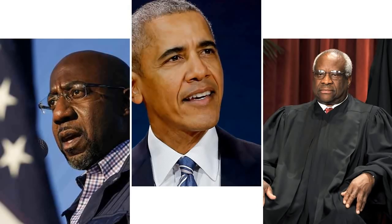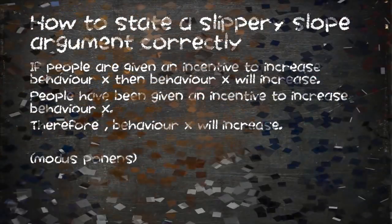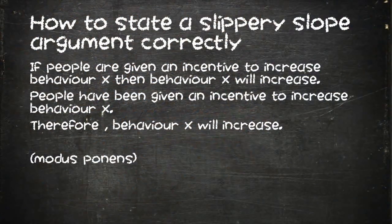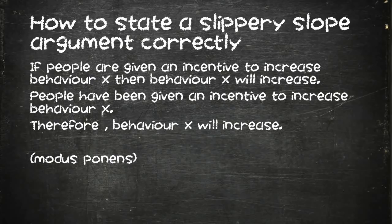So what is the missing part of the argument that would make it not a fallacy? It strikes me that all these arguments are missing is the unstated assumption that people respond to incentives — something anyone who studies economics understands instantly. It's just a missing premise. In modus ponens it would be: if people are given an incentive to increase behavior X, then behavior X will increase; people have been given an incentive to increase behavior X; therefore behavior X will increase.